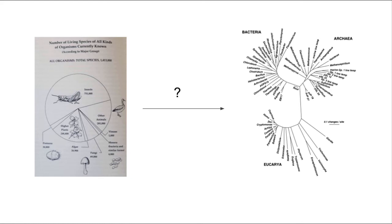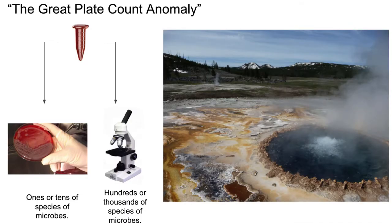What changed between 1993 and 2011? In less than 20 years, we had a vast shift in how we viewed the diversity of life on earth. This really came about through what we now call the great plate count anomaly.